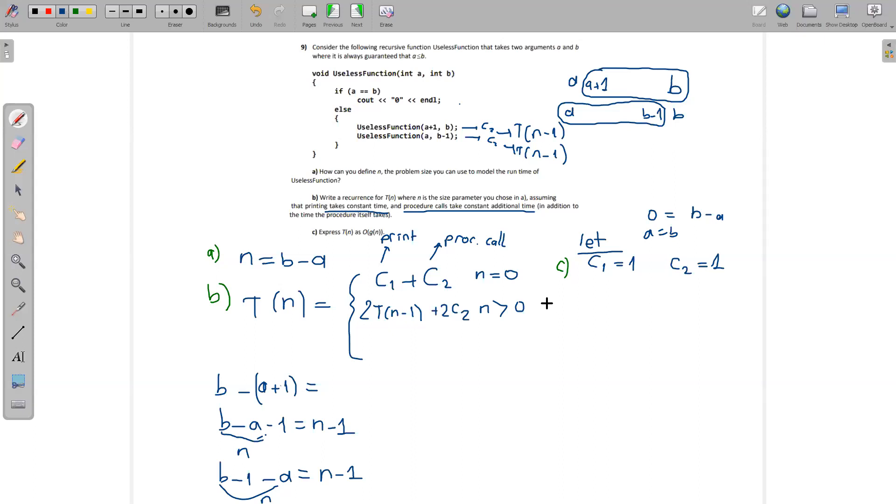Then it will become like this. T(n) or T(0), because when n is 0, T(0), I'm just putting it inside. It is 2 because C1 and C2, I'm just summing them as 2, which is the base case.